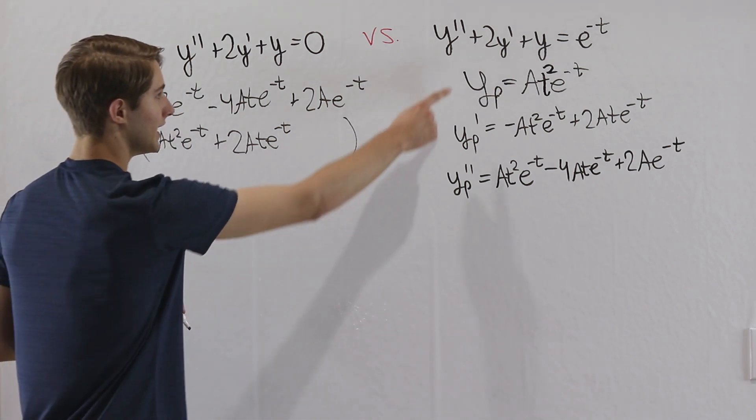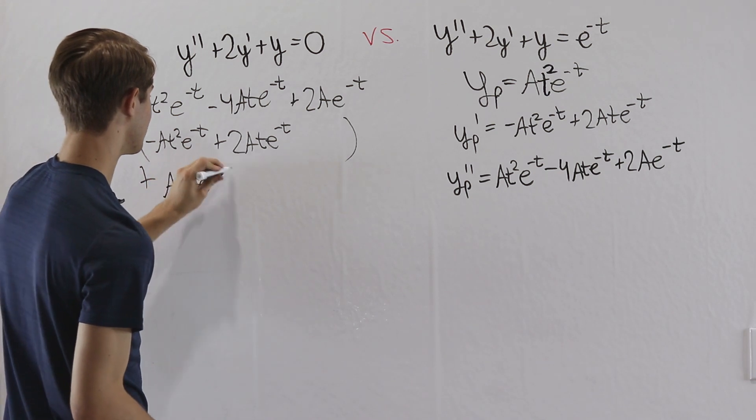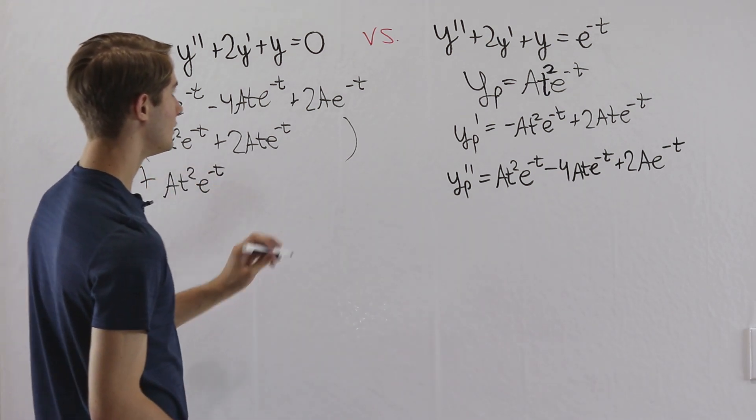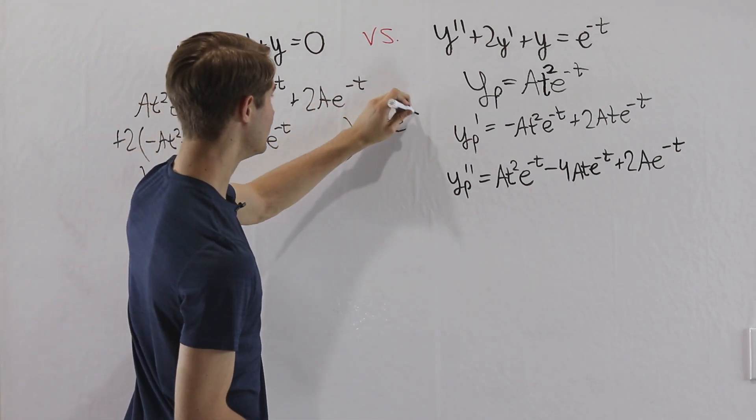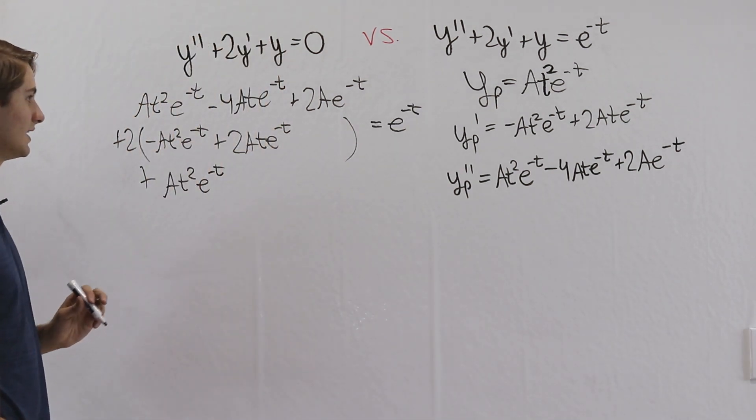Lastly, we're going to look at plus y, so that will be plus a t squared e to the negative t. And this is all equal to just 1 e to the negative t on the right side. So now let's take a look at how these things cancel.